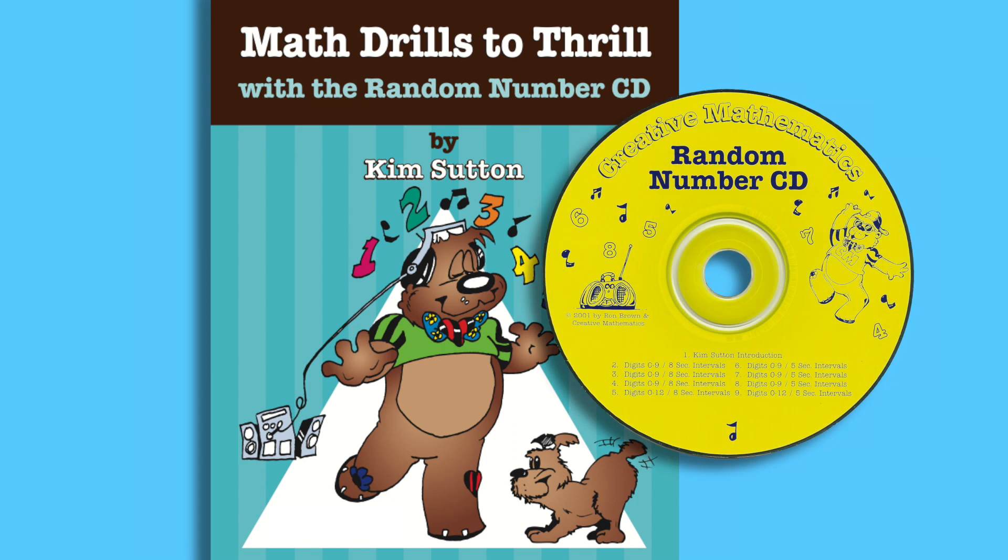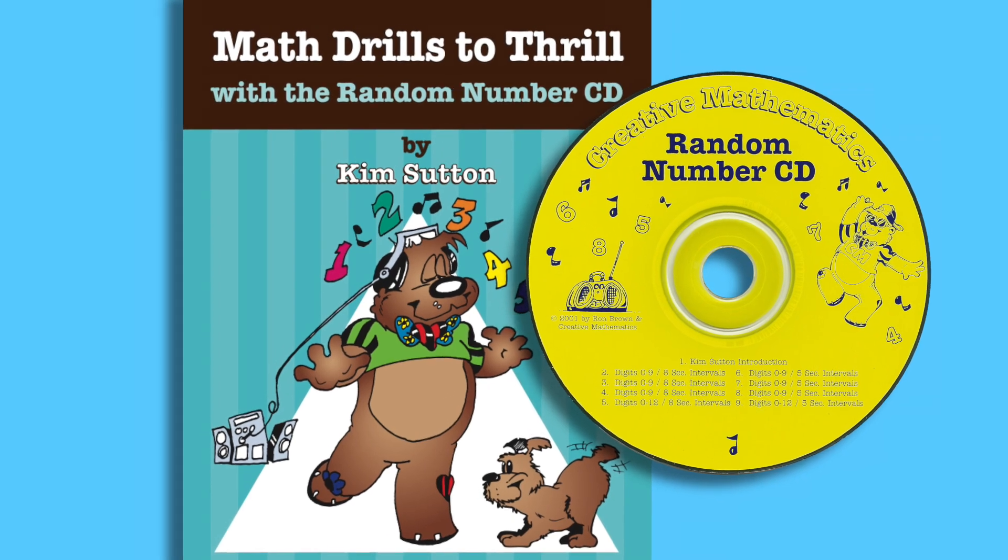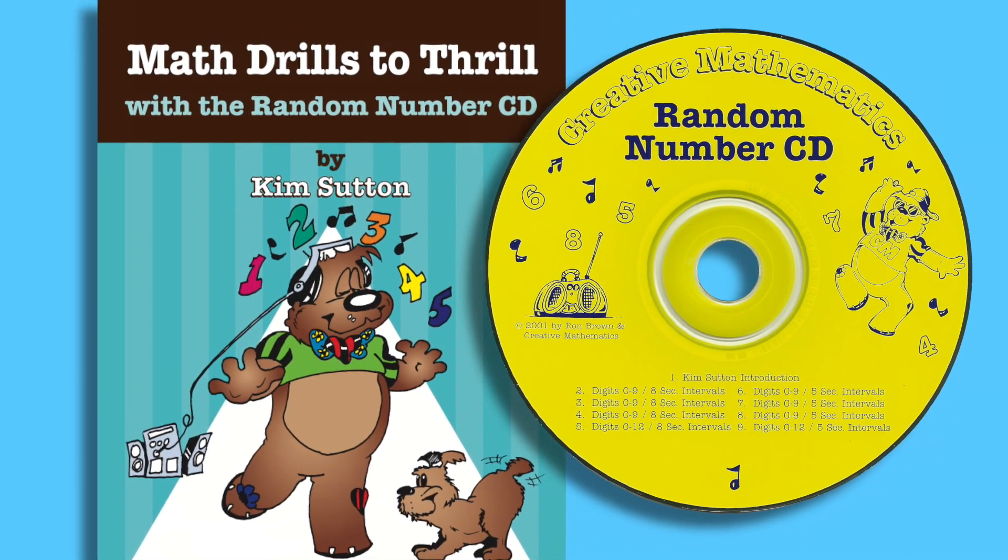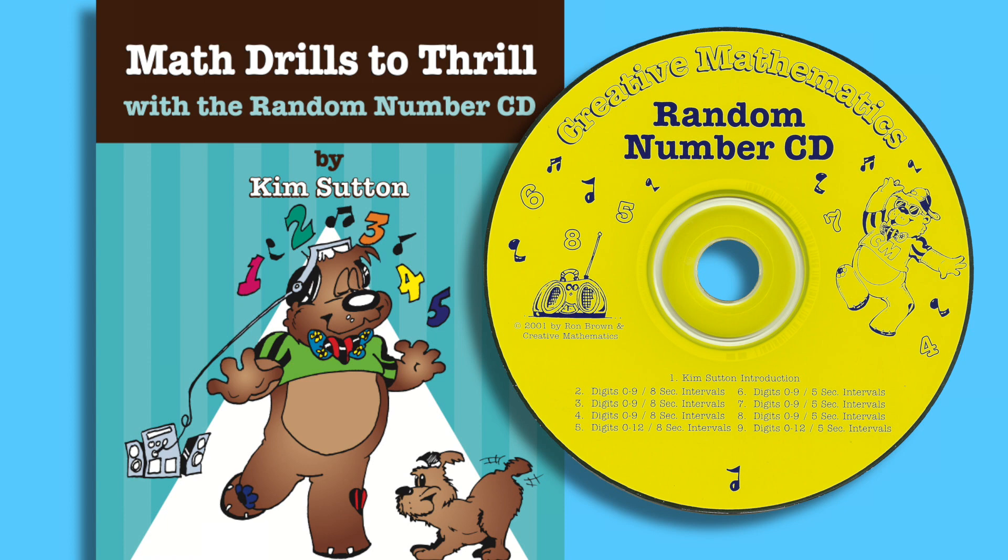The book includes the wildly popular Random Numbers CD, which generates numbers that can be used with any drill command like doubles, making sums of ten, or times three. There are four tracks with numbers set to music at eight second intervals and four tracks with numbers set to music at five second intervals. Students will graduate from one interval to the faster interval as they get more fluent with their facts.